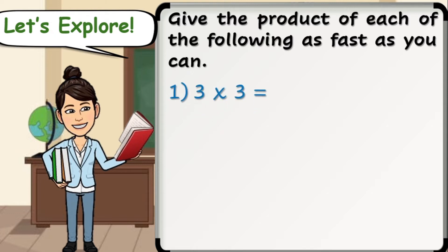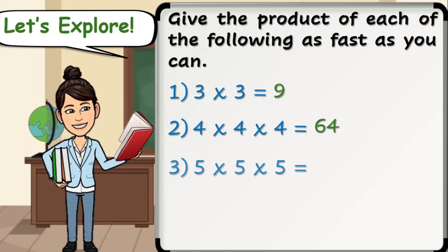Number 1: 3 times 3. The answer is 9. Number 2: 4 times 4 times 4. The answer is 64. Number 3: 5 times 5 times 5. The answer is 125.